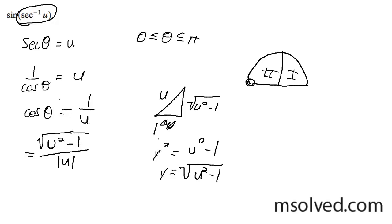And as a result, to keep the sine positive, we need to have an absolute value on u. So that's why you have an absolute value sign down here. And this is the solution right here.